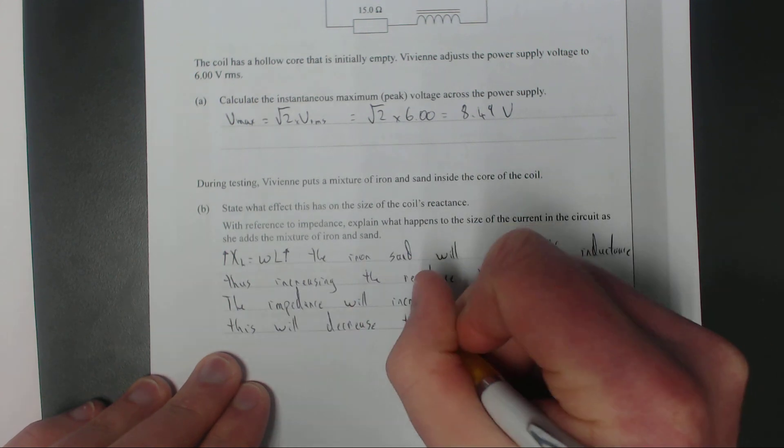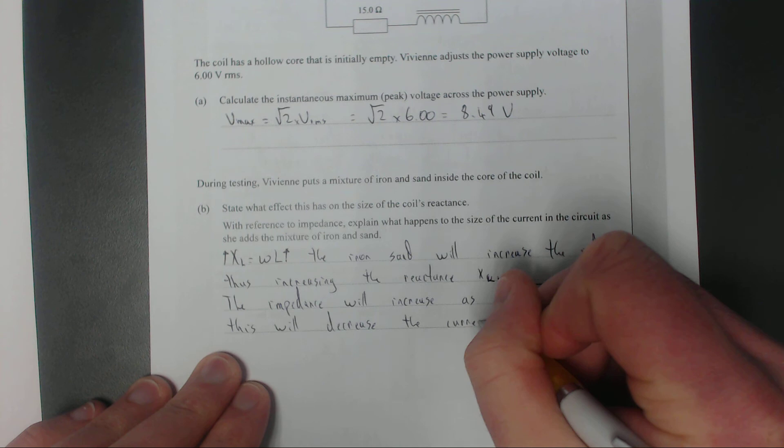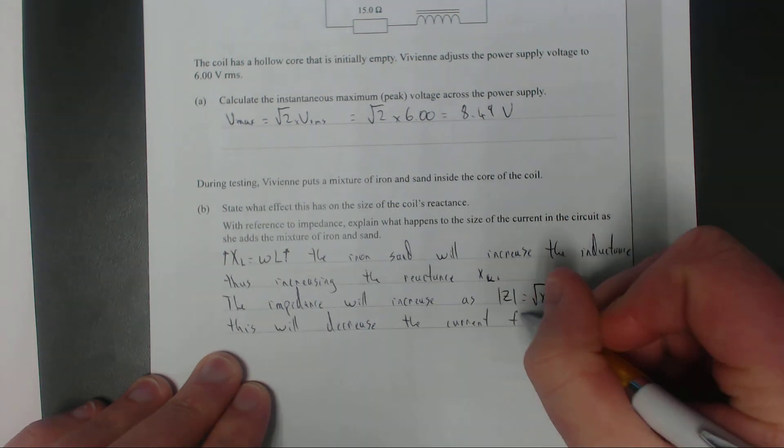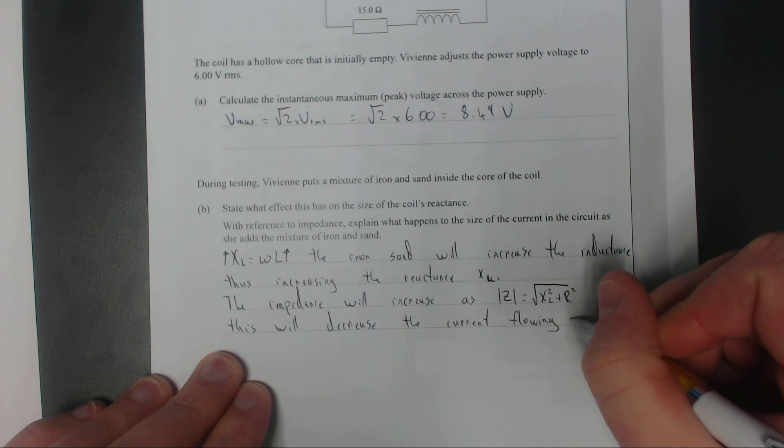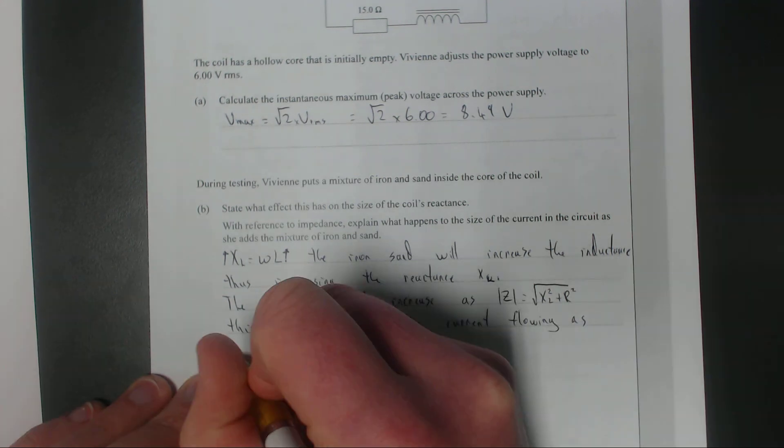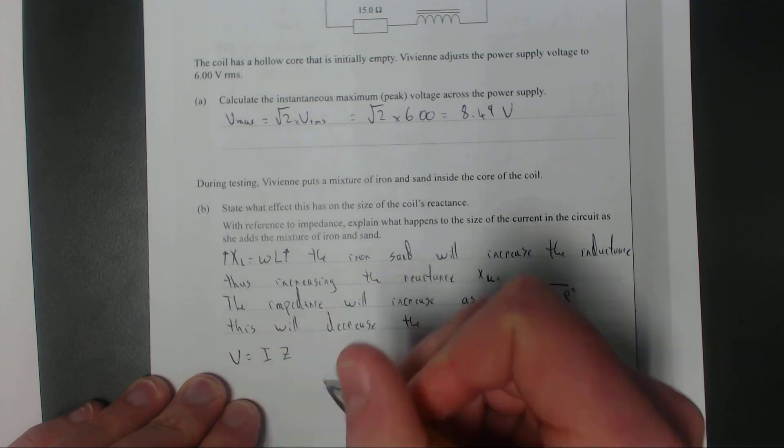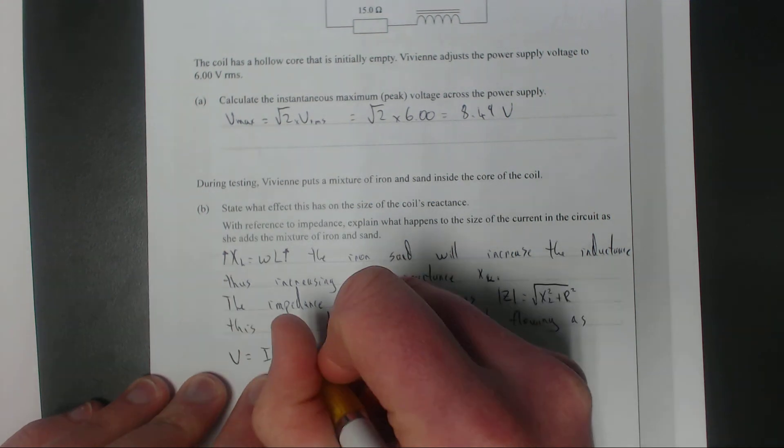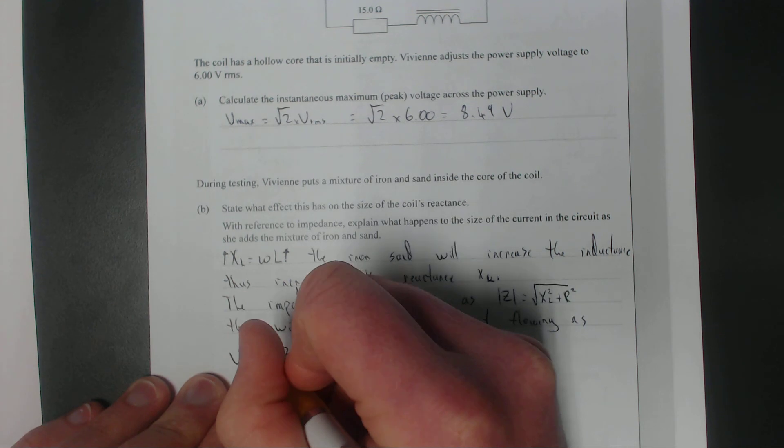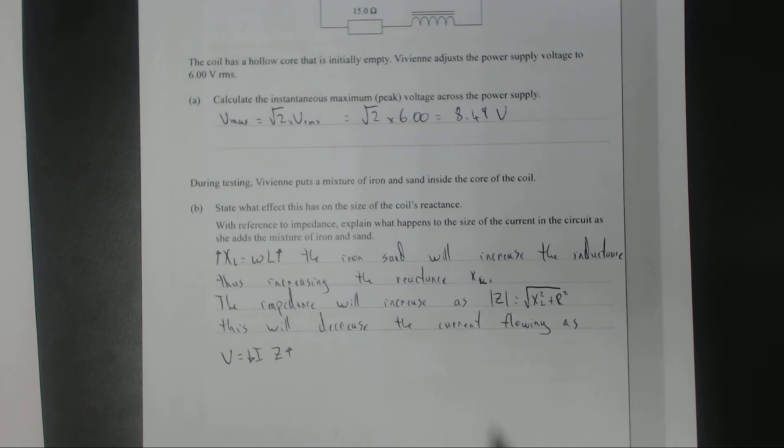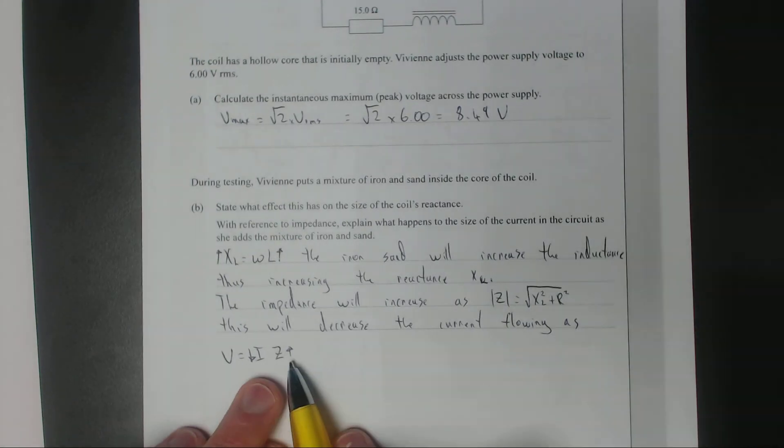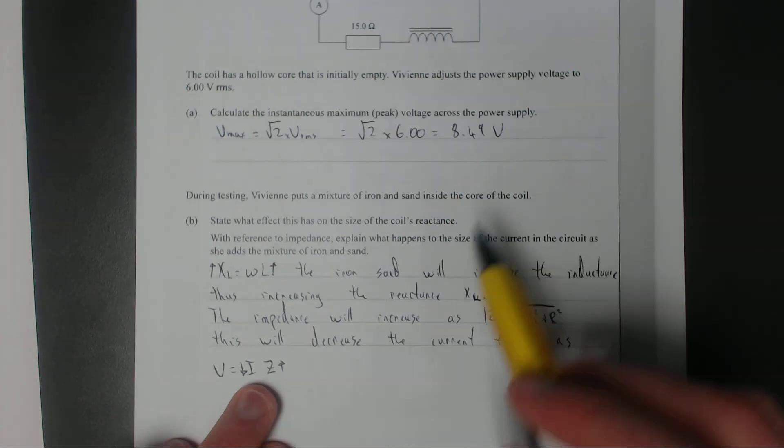V equals current times impedance. Impedance and resistance are not the same thing. Impedance is basically fancy resistance. You only get impedance in oscillating circuits, AC circuits. Capacitors and inductors have impedance because they react to the change in voltage or current.